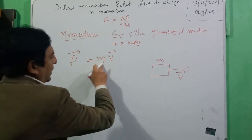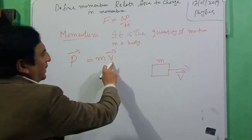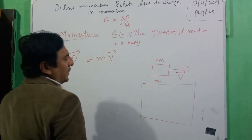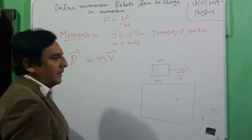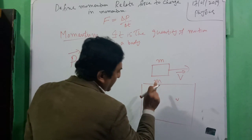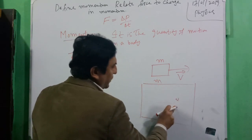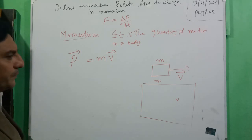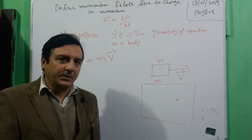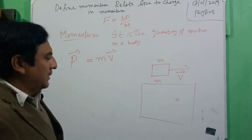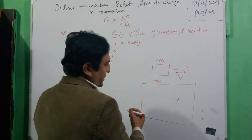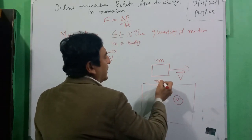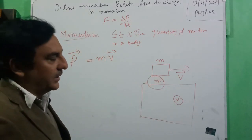Momentum is obtained from mass and velocity. If there is a large mass moving with small velocity, when we multiply this greater mass with very small velocity, we obtain a greater momentum. For example, a train which is moving with very small speed hits a truck — the truck will be crushed. Because the mass is very large, so momentum is large.